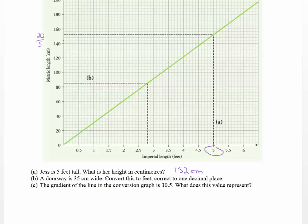So a doorway is 35 centimeters wide. Convert this to feet correct to one decimal place. For part B, let's go and try and find out where 35 is. So 20 and 30 is here, and so 35 is around about here. So let's go across and let's try and read off my graph. Now remember, this is really only an approximation. We need to know what each of these parts is. So we're going between 0 and 0.5. If I do 0.5 and I divide that by 5, I get 0.1. So each of these little squares is 0.1. So this is 1.1, and then this has to be 1.2, so that means it must be 1.2 feet.